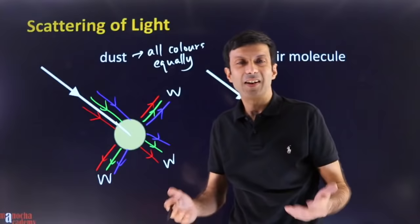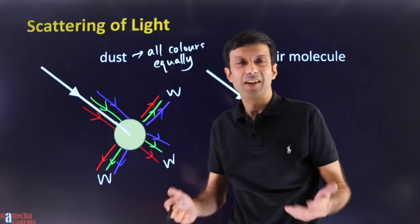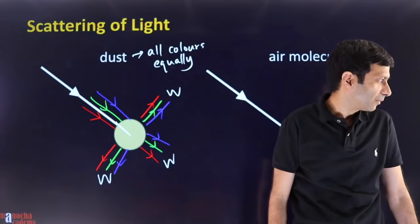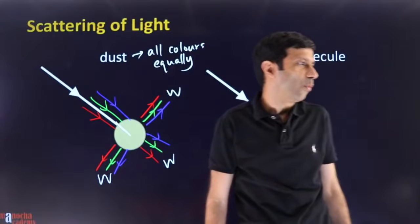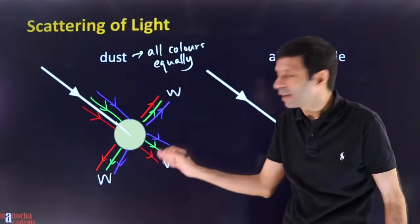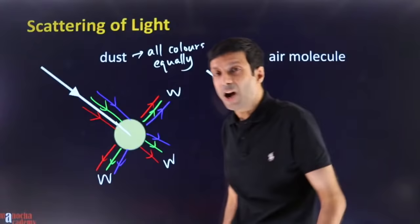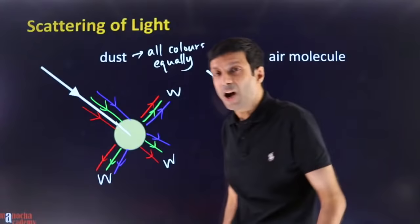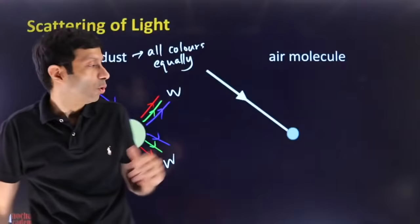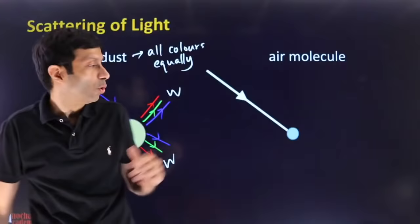So when white light falls on dust particles, since all colors are scattered equally, the beam you see appears white. But now it becomes more interesting when we consider the air molecule. The air molecule is very small and comparable to the wavelength of light, whereas dust particles are much larger than the wavelength of light.